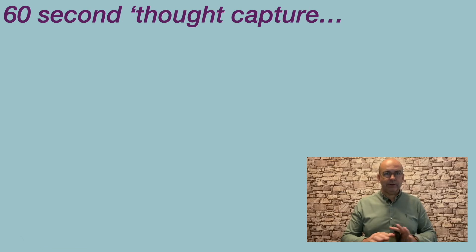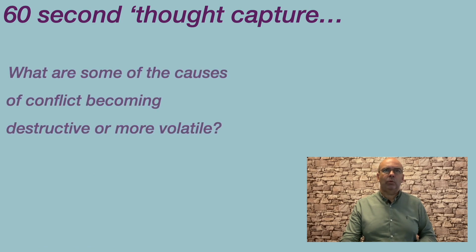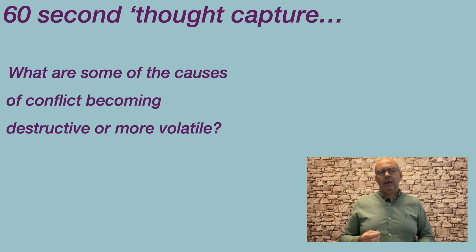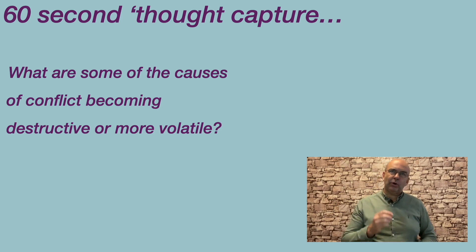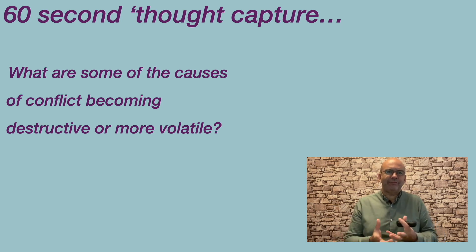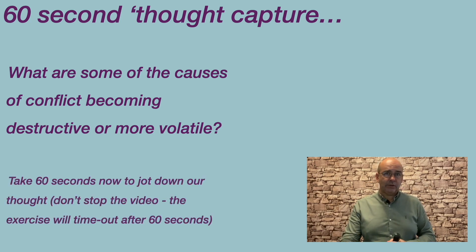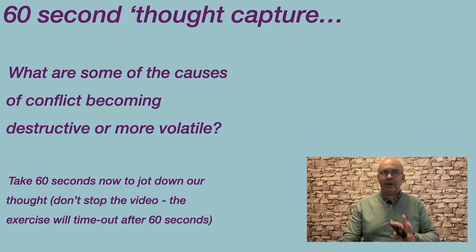What I want to do is give you a reflective question. Consider: what are some of the causes of conflict becoming more volatile? We've looked at destructive and constructive conflict — what are some of the causes that lead conflict from constructive to destructive? What factors play into that? Take 60 seconds out to think about that. Grab a pen and paper and jot your general thoughts down. If you want to pause the video and take a little bit longer, by all means do.